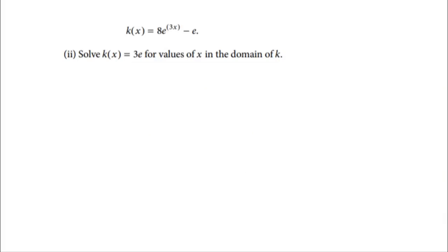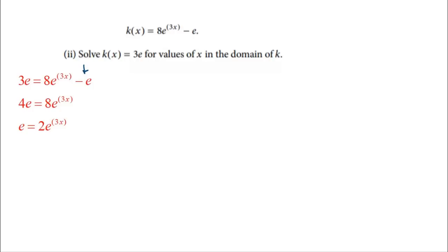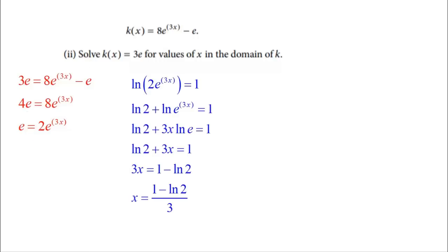The next part of Part B asks me to solve K of X equals three E. First I substitute, then add the E over to the left side to get four E, then divide both sides by four to get E equals two E to the three X. To solve for X, I'll use the definition of a logarithm — since logs are inverses of exponential functions. The rule is: W to the X equals Y can be written as log base W of Y equals X, always equaling the exponent.